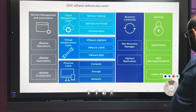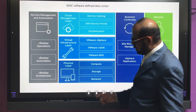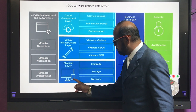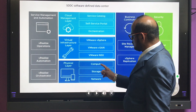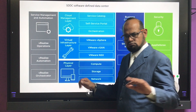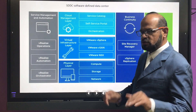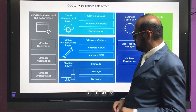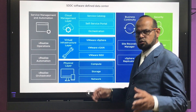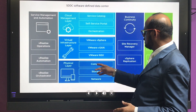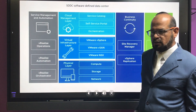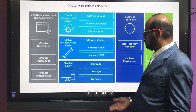In the physical layer you have compute, storage, and network. For network, you have big switches — Cisco, Extreme, or other switches. For storage, you have 3PAR storage, EMC storage, and other storage. For compute, you have DL servers, HP servers, IBM servers.